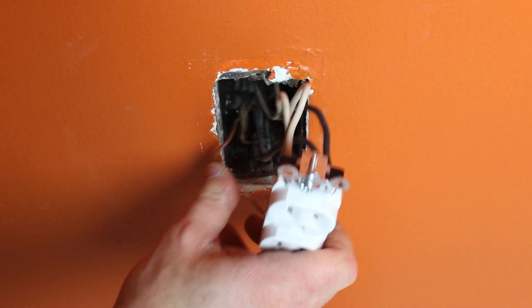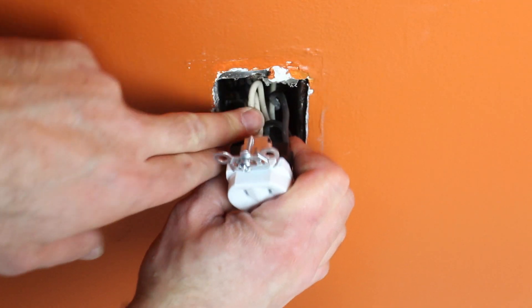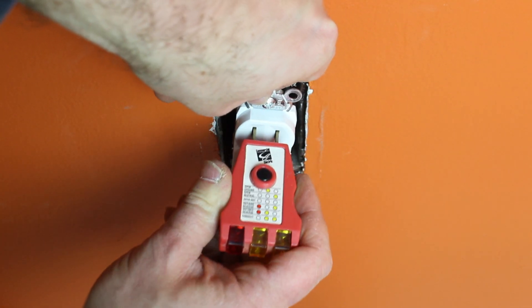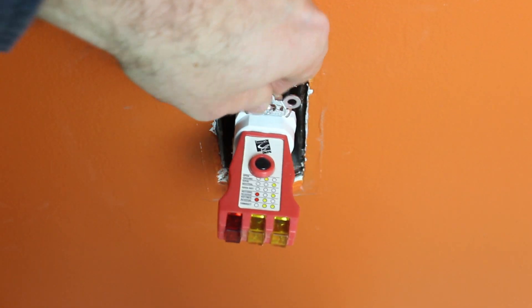Plug your receptacle analyzer into the outlet. Turn the power on. Be careful. Do not touch bare wires. And double-check that your outlet's wired correctly. In this case it is. It's indicated by the two yellow lights.